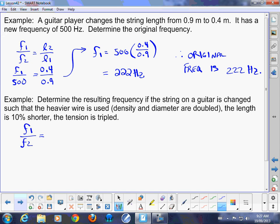So f1 over f2 would equal, so we talk about a couple of things. We talk about heavier wire, so density and diameter are involved. So density would be square root of rho 2 over the square root of rho 1. Diameter is included, d2 and d1, so it's all multiplication. You're multiplying those factors or fractions together.